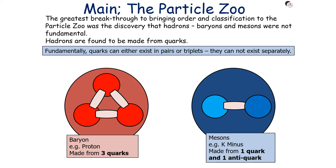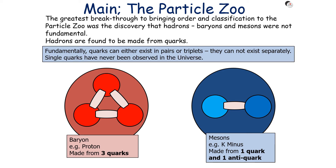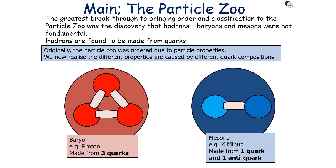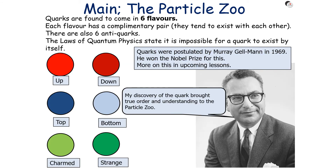Quarks can either exist as pairs, such as in a meson, or in triplets as a baryon, but they can't exist separately. Single quarks have never been observed in the universe. Originally, the particle zoo was ordered due to particle properties, but we now realise that these different properties are caused by different quark compositions.